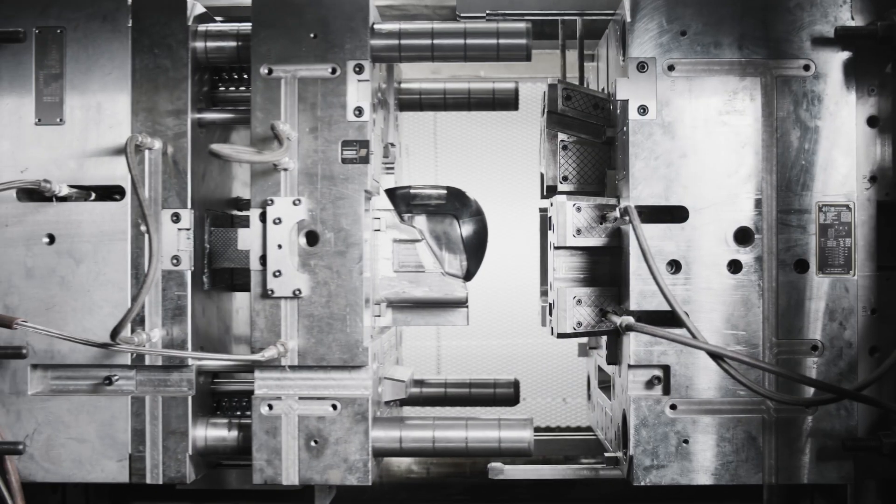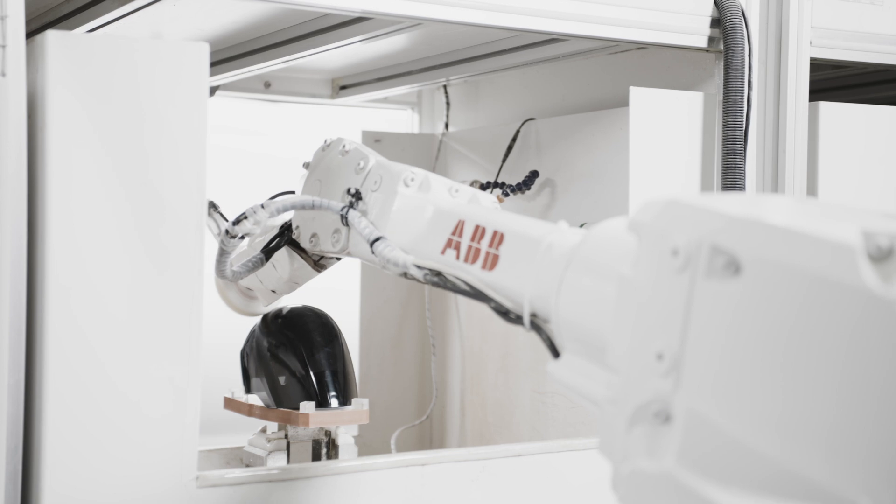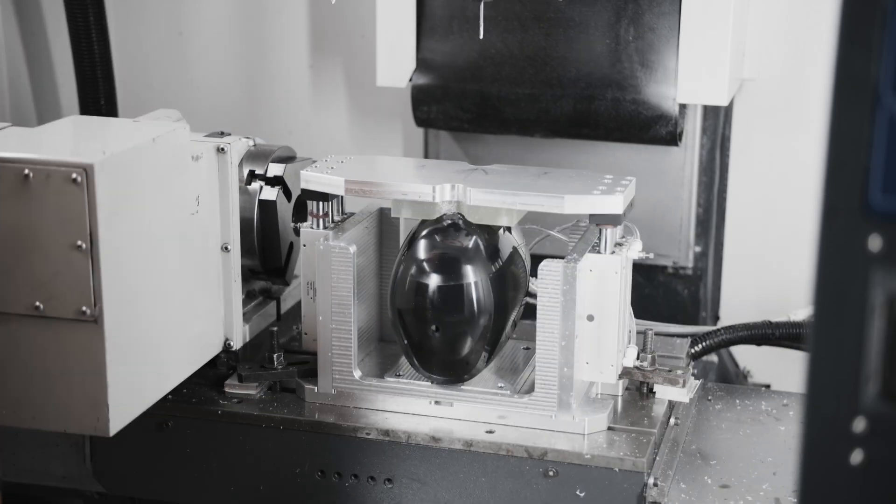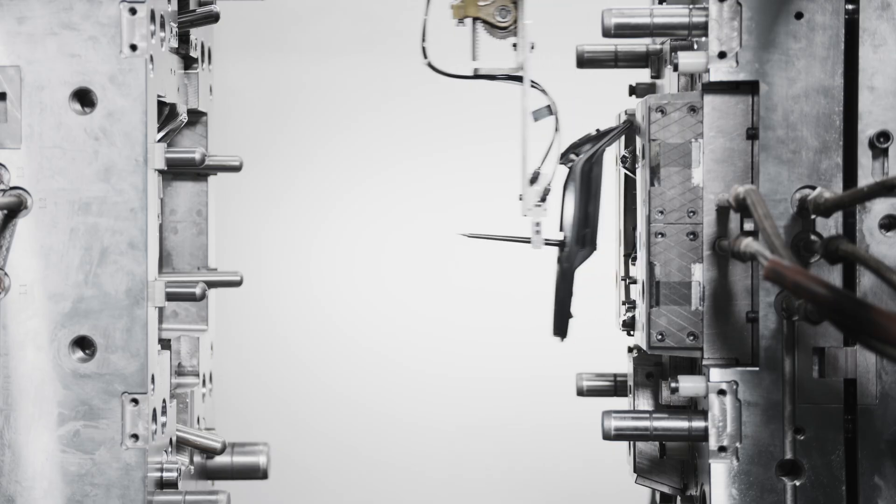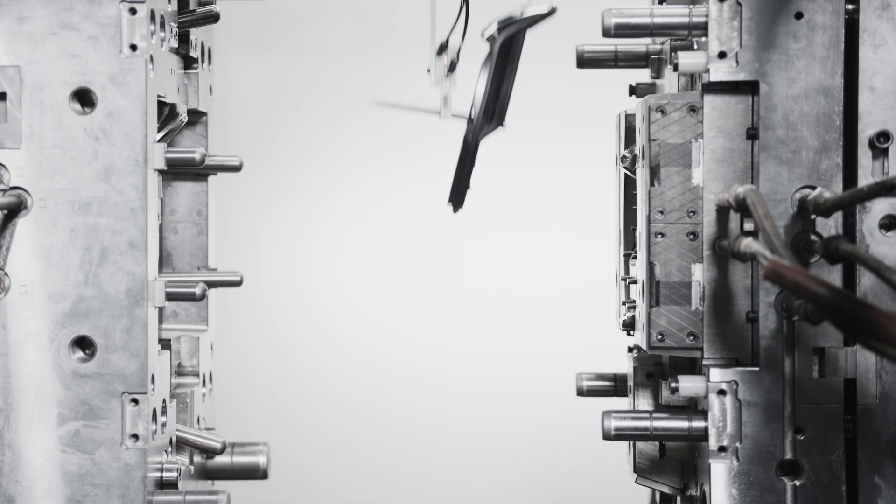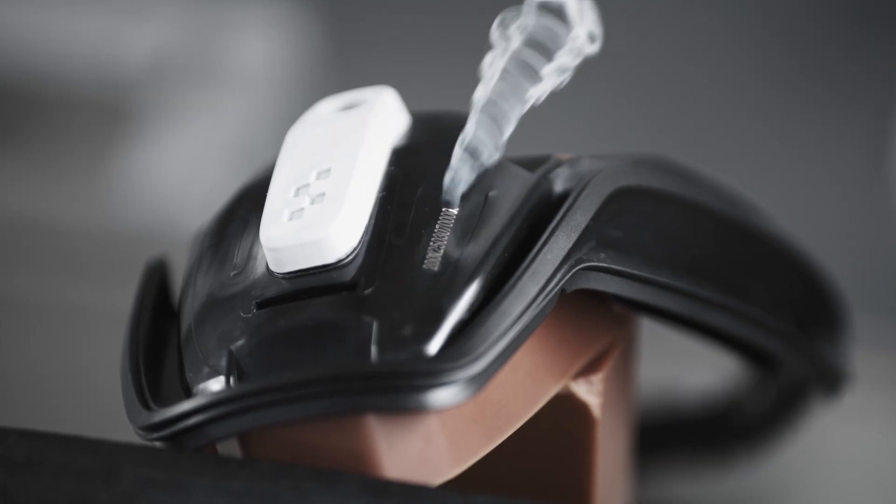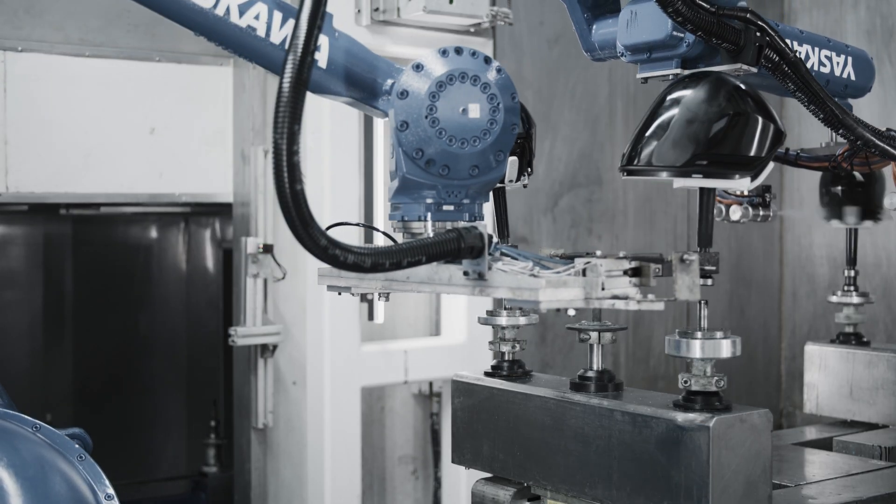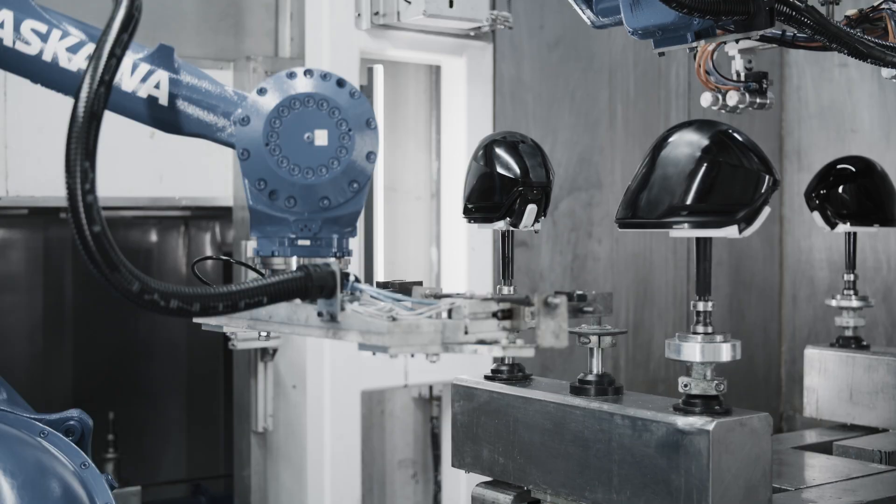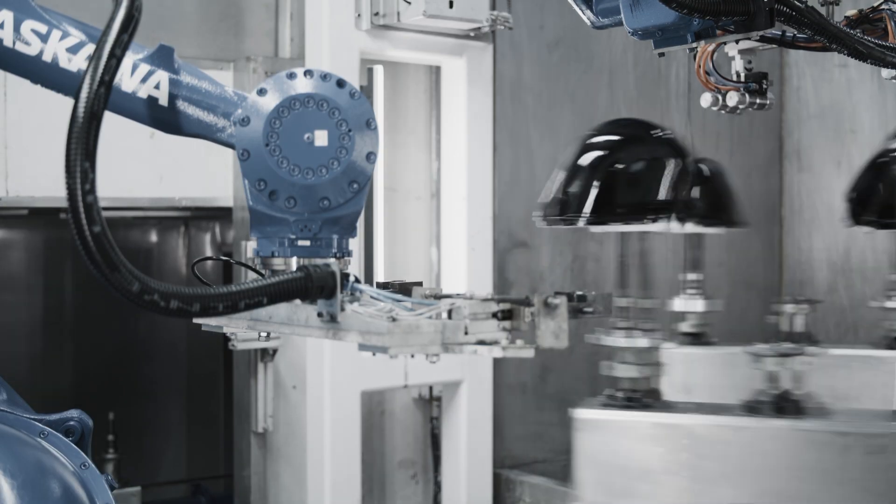But Figure's most impressive leap isn't technical, it's industrial. Unlike most humanoids, Figure 0-3 was built for mass manufacturing. The company re-engineered nearly every part with cost, part count, and assembly time in mind. They switched from CNC machining to high-volume processes like die casting, injection molding, and stamping, front-loading the investment into tooling so the cost per unit drops dramatically at scale.